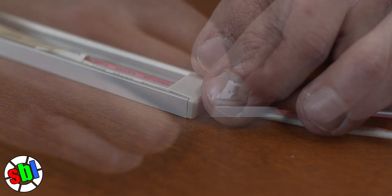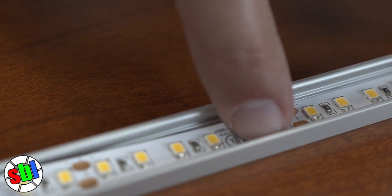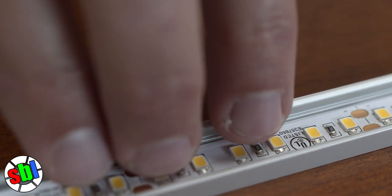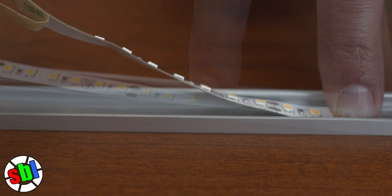Partially remove the adhesive backing while keeping the wires fed through the end cap. Starting at one end, press the LED strip into the channel while simultaneously removing the adhesive backing, keeping the LED strip in the center of the channel.